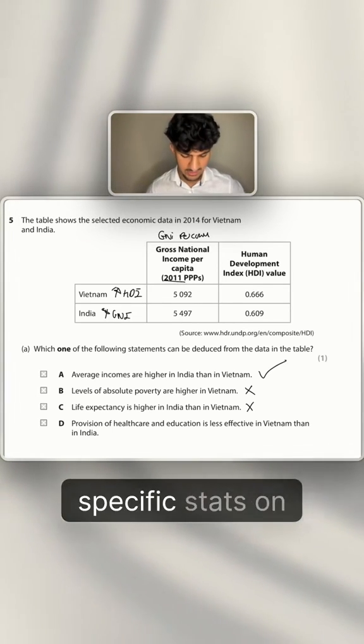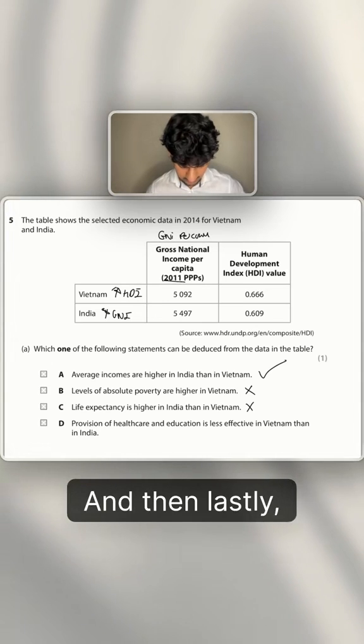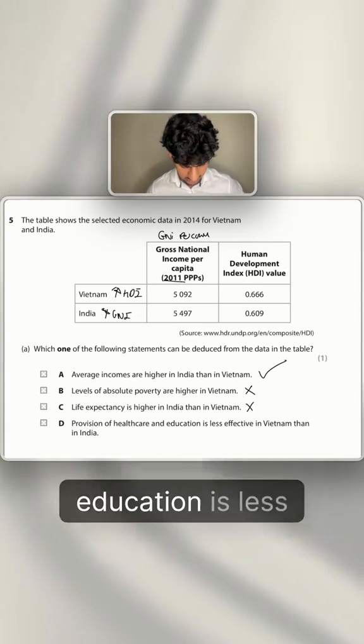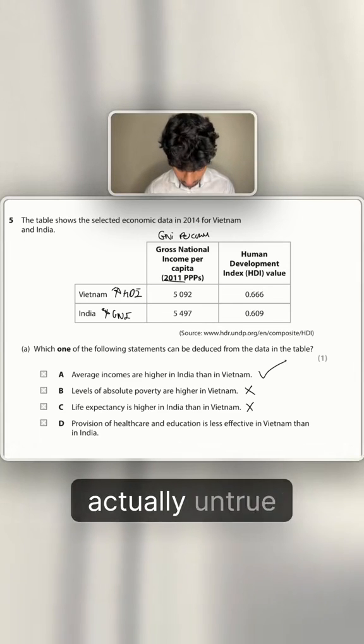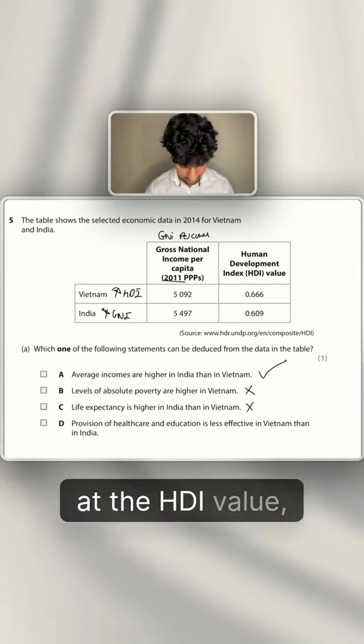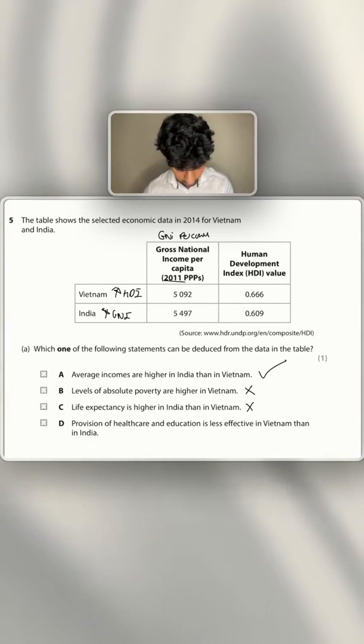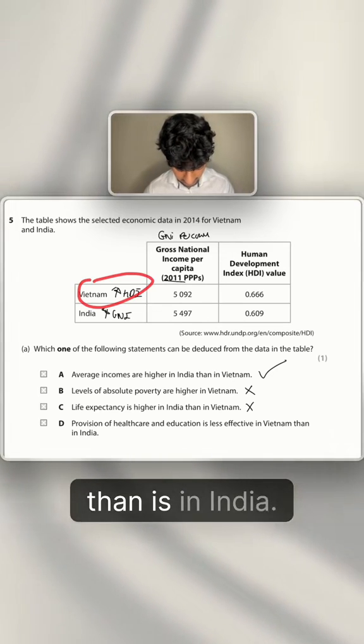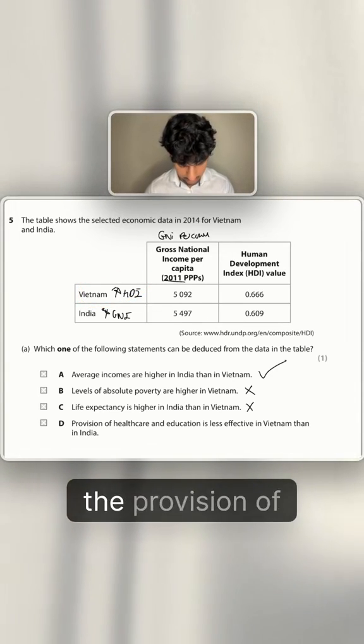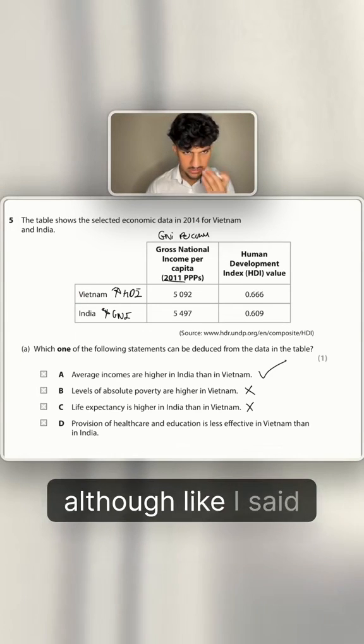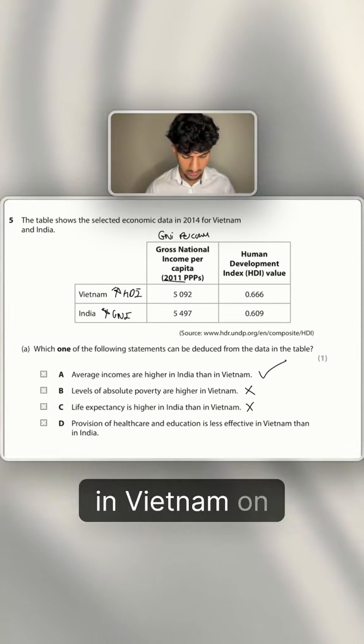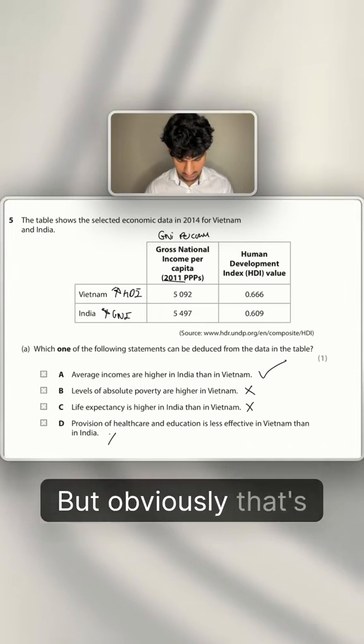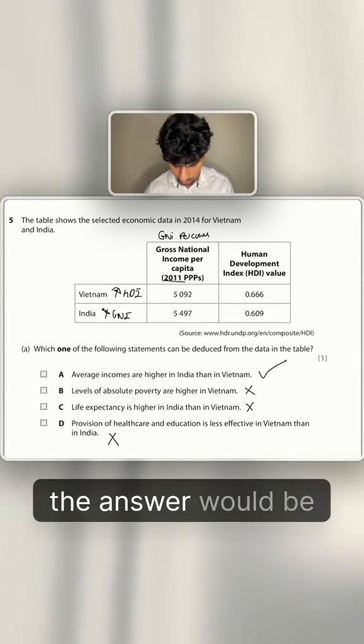And then lastly, provision of healthcare and education is less effective in Vietnam than India. I'm going to say that's actually untrue, because if you look at the HDI value, the HDI value of Vietnam is higher than it is in India, meaning that the provision of healthcare education, although we don't have the specific stats, it probably is likely to be higher in Vietnam on average than in India. But I'm going to say that's wrong, so yeah, the answer would be A.